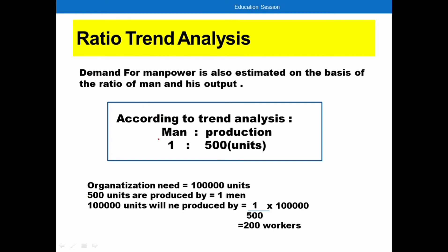Next we have statistical techniques, starting with ratio trend analysis. Here we take the ratio between workers and production. For example, one worker produces 500 units. To find out how many workers are needed to produce 1 lakh units, we calculate 1 divided by 500, multiplied by 1 lakh units. This gives us the number of workers required to produce 1 lakh units. This is ratio trend analysis.